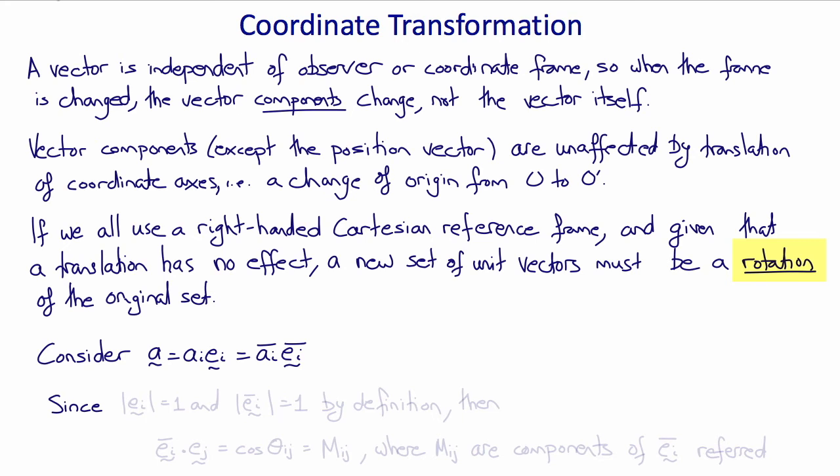Since by definition the magnitudes of ei and ei bar are one because they're unit vectors, then the dot product between them, ei bar dot ej, would equal the cosine of the angle between i and j. Since there are nine combinations, this would be a matrix of angle cosines.